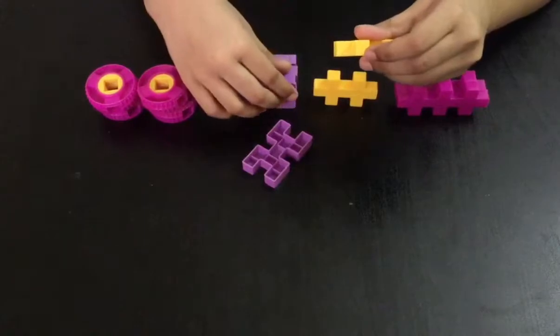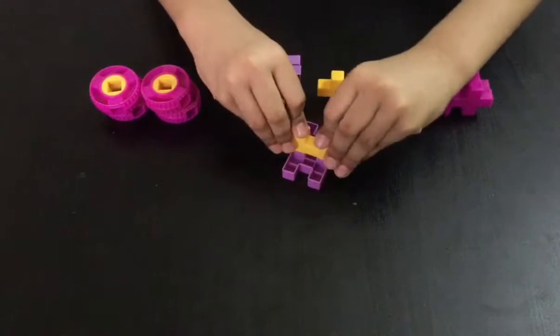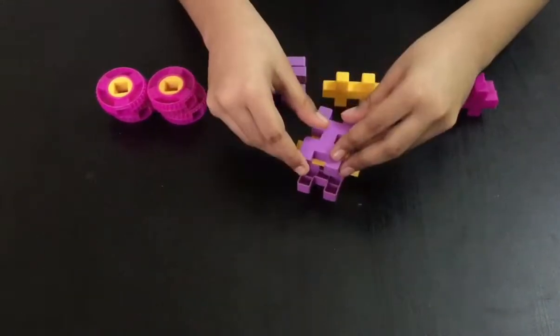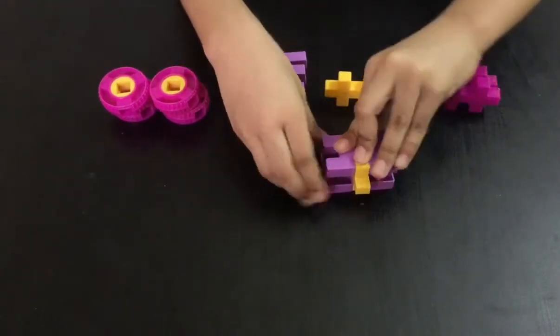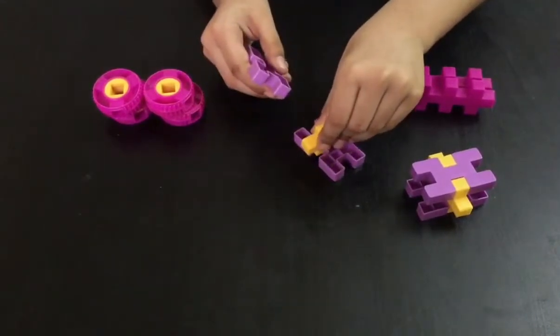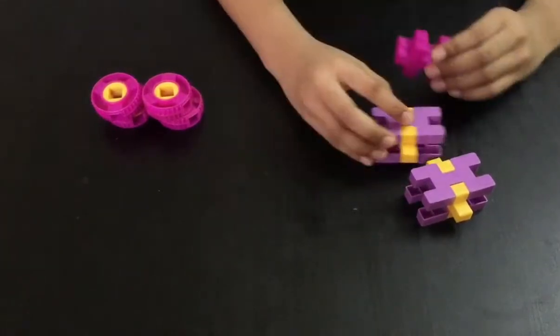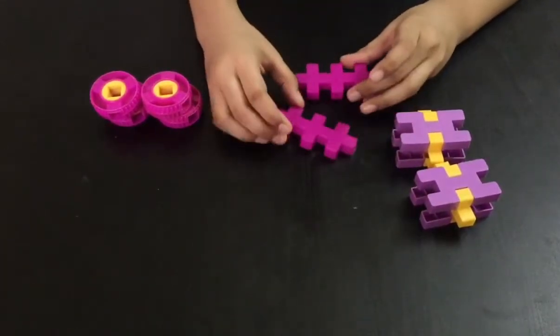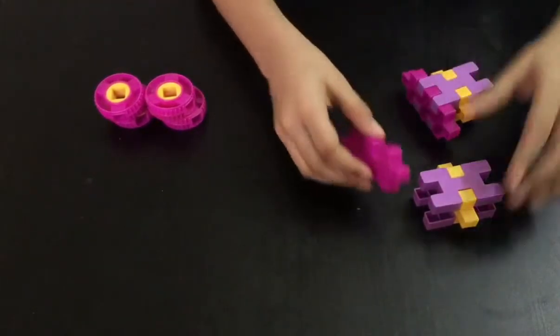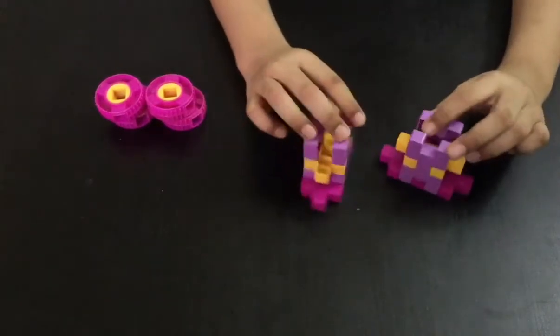Take one purple block and one yellow block. Attach it in here like this. And attach one purple block here onto it to close it like this. Make another piece, similar to the first one. You will need two darting blocks and attach it at the bottom. There we go.